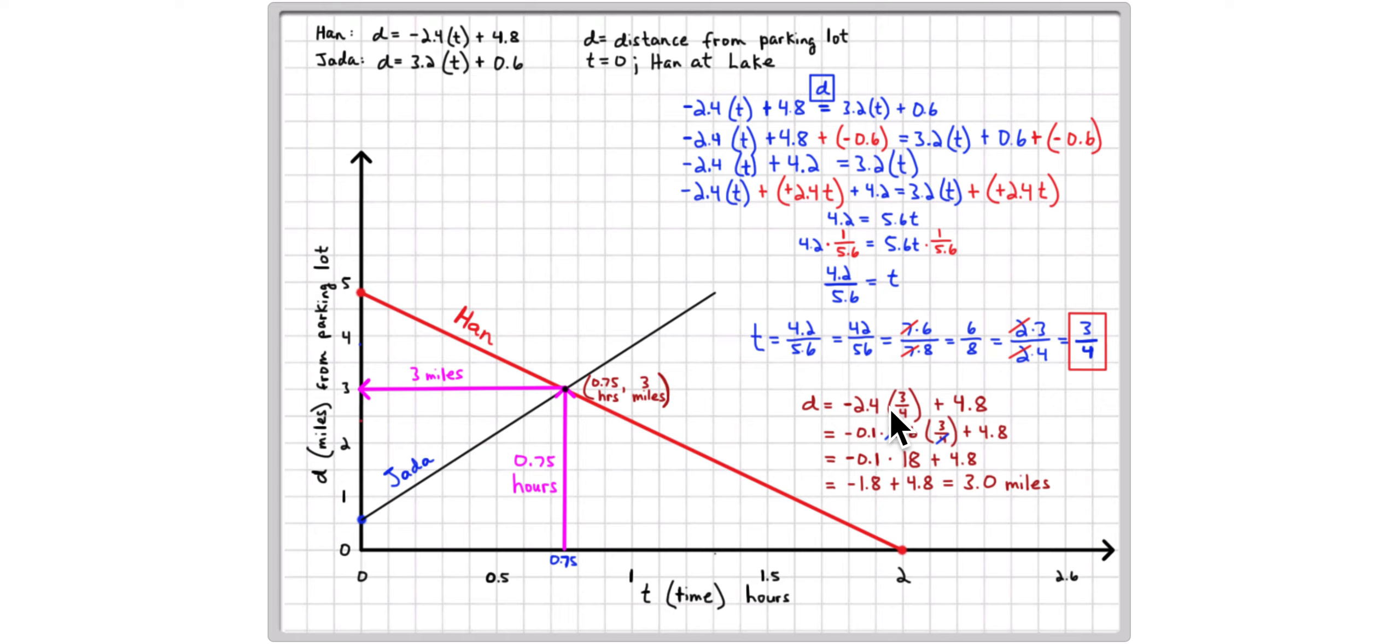Then plug that 3 fourths back into one of the equations and you know that 3 fourths of 24 is 18. 24 divided by 4 is 6, 3 times 6 is 18. So this is going to be a negative 1 and 8 tenths. So you're going to get an answer of 3 miles.